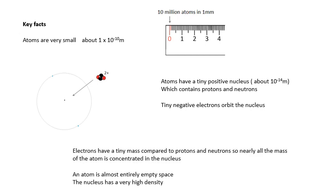Electrons have a tiny mass compared to protons and neutrons. It's about 2,000th of the mass. So nearly all of the mass of the atom is concentrated in the nucleus. And an atom is almost entirely empty space. There's not a great deal to it. This means that the nucleus will have a very high density. Remember, density is mass divided by volume.